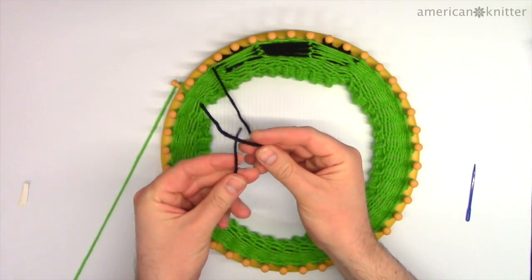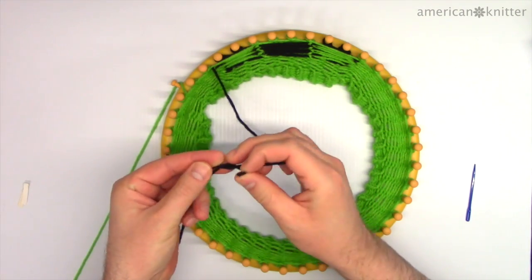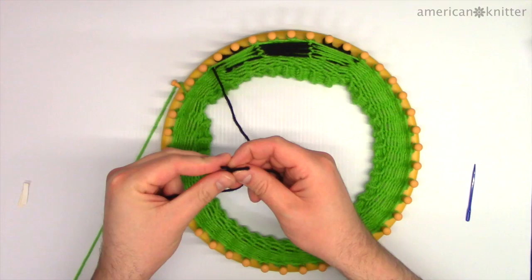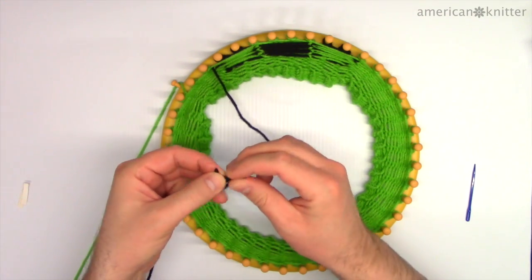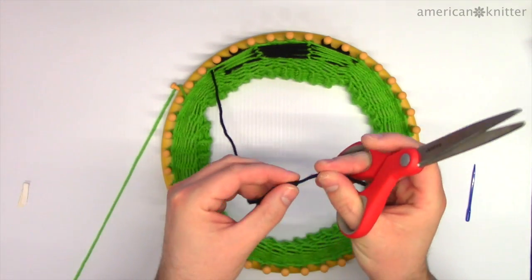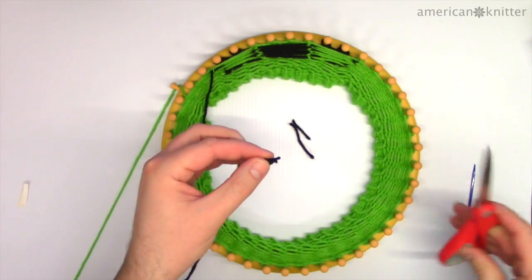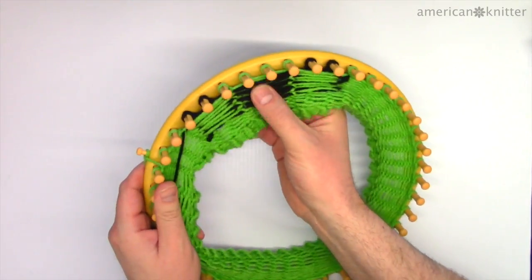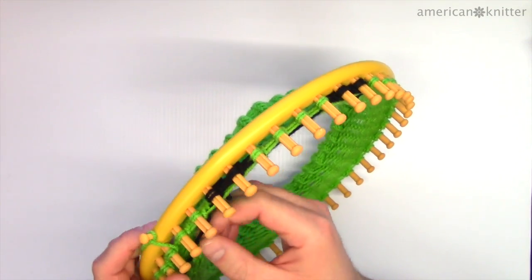Now if at any point you run out of black yarn on your needle, just take the needle off and tie on a longer strand of yarn. The only thing you want to make sure is when you tie it, you make your knot as small as possible. With 8 rows added, we're ready for the next change in the pattern.